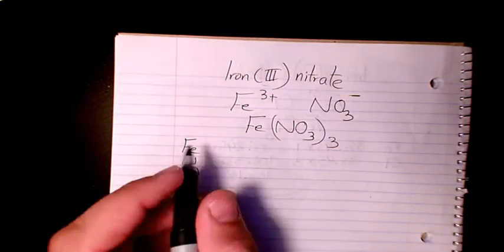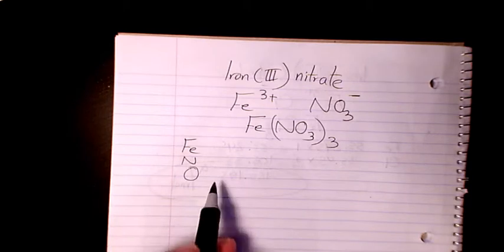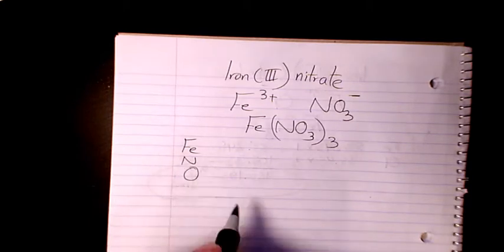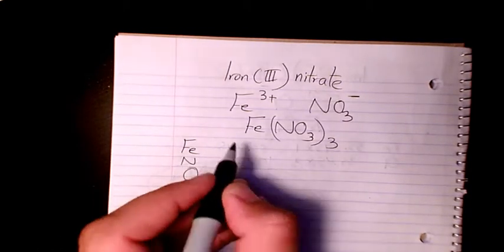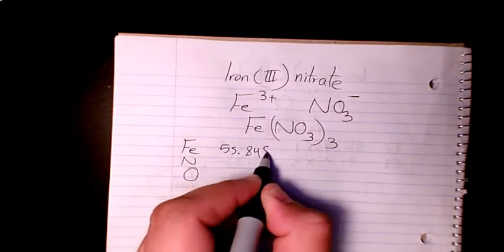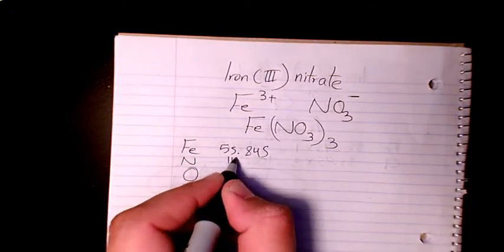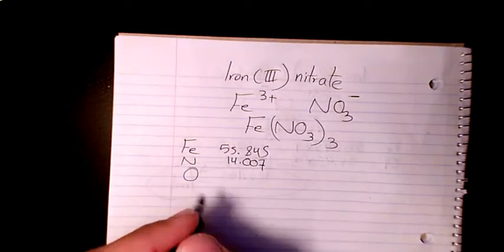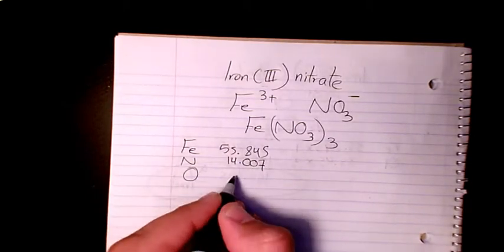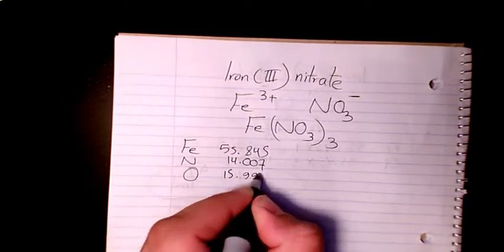Then I need to use the periodic table to find out the atomic mass of each of these elements. Atomic mass of Fe is 55.845, atomic mass of nitrogen is 14.007, and atomic mass of oxygen is 15.9999.